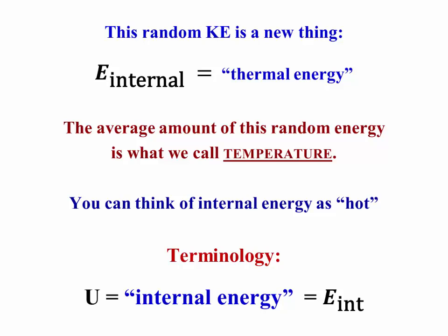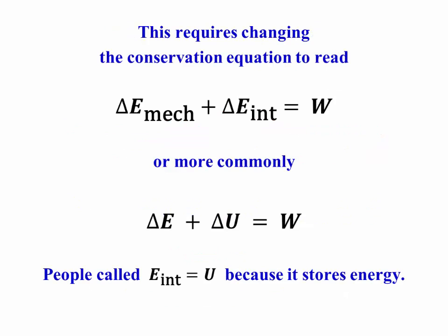The terminology that's used is to use capital U for internal energy. The idea here is that it's sort of stored thermal energy, so it's given a symbol that makes it look like potential energy. If we're going to do this, we have to include that energy in our conservation of energy equation. So we'll now have the change in mechanical energy plus the change in internal energy would be due to work. More commonly, this would be written as just ΔE plus ΔU, where we've called internal energy U because it stores thermal energy.